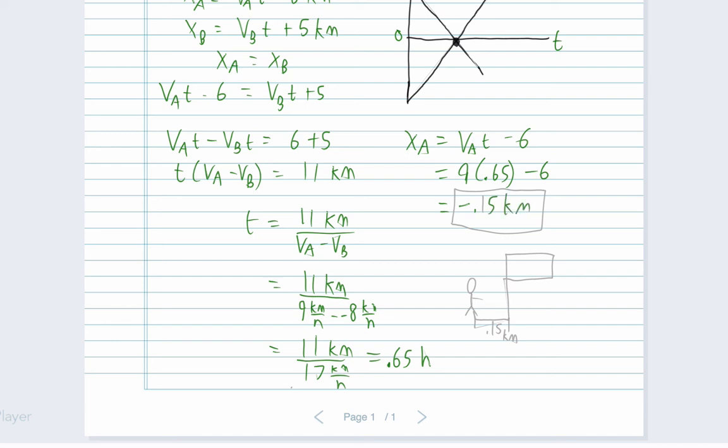And there we go. That's our answer. So what does that mean relative to the flagpole? Well, if this is the flagpole, they're going to meet a distance 0.15 kilometers west. So this is where they give a high five or whatever. This is where they meet up.